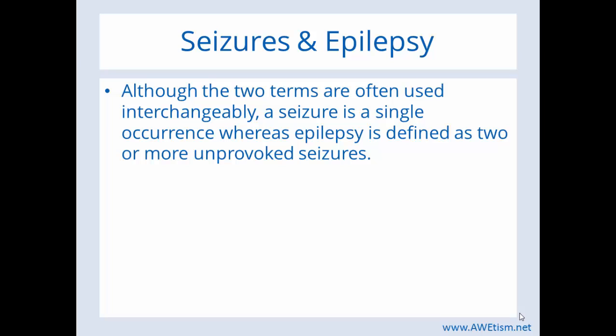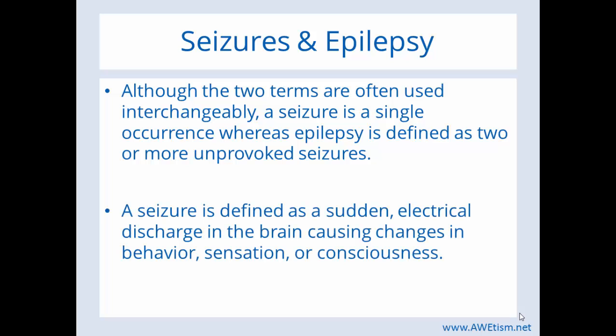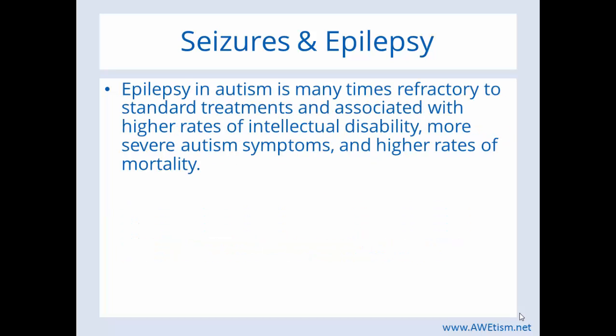Seizures and epilepsy — although the two terms are often used interchangeably, a seizure is a single occurrence, whereas epilepsy is defined as two or more unprovoked seizures. A seizure is defined as a sudden electrical discharge in the brain causing changes in behavior, sensation, or consciousness. Epilepsy and autism is many times refractory to standard treatments, meaning it doesn't respond to standard treatments. It is associated with higher rates of intellectual disability, more severe autism symptoms, and higher rates of mortality — which is why it's so very important to understand what comorbidities your child has.